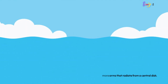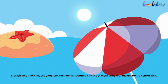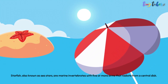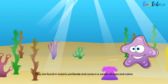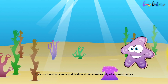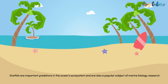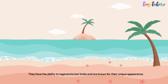Starfish, also known as sea stars, are marine invertebrates with five or more arms that radiate from a central disk. They are found in oceans worldwide and come in a variety of sizes and colors. Starfish are important predators in the ocean's ecosystem and are also a popular subject of marine biology research. They have the ability to regenerate lost limbs and are known for their unique appearance.